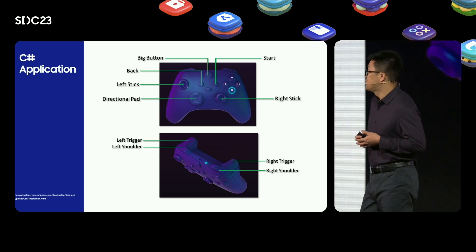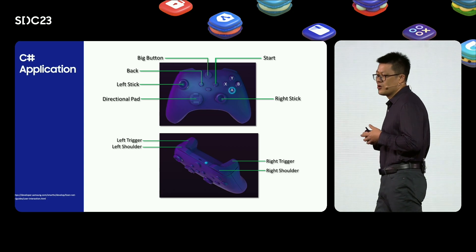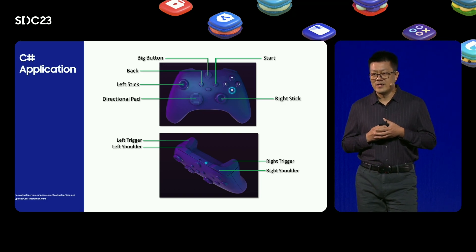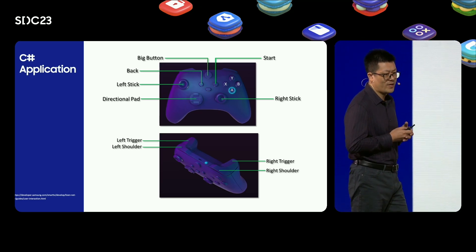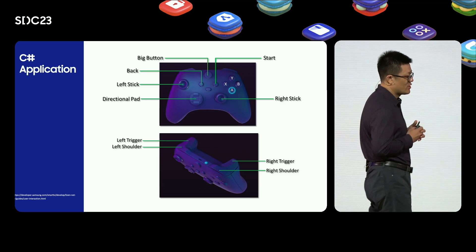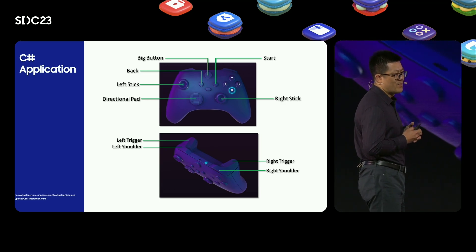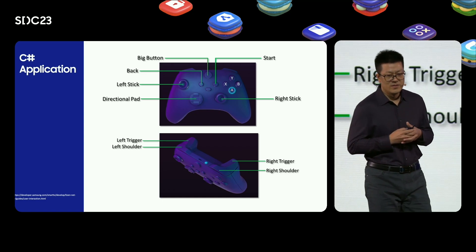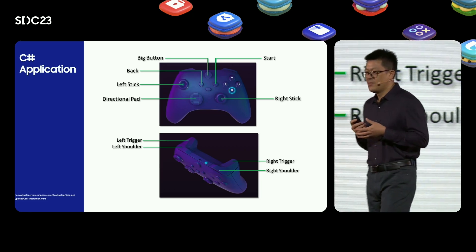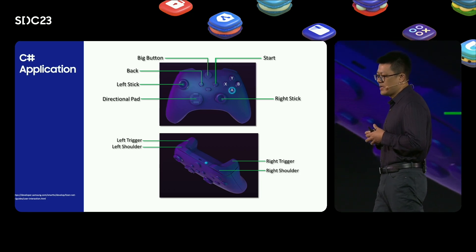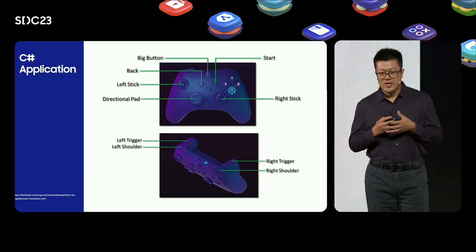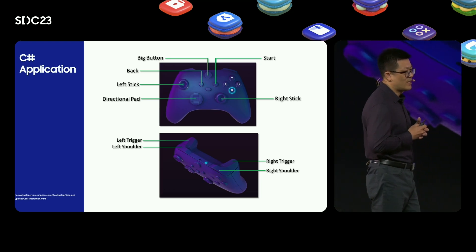Now let's talk about C-Sharp applications. We have provided a set of C-Sharp GamePad API to help you use gamepads in your C-Sharp applications. Before we start using the API, let's look at the gamepad button mapping for C-Sharp GamePad API. The buttons on the gamepad are divided into four types: GamePad Buttons, GamePad D-Pad, GamePad Thumbsticks, and GamePad Triggers. GamePad Buttons includes button A, B, X, Y, back, start, big button, left stick, right stick, left shoulder, and right shoulder.